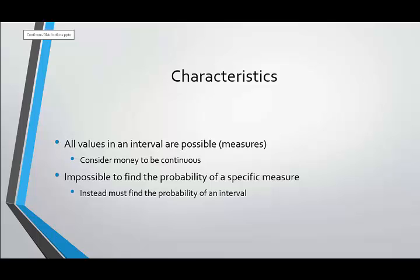So instead, what we have to talk about when we're talking about a continuous distribution is we need to talk about an interval. So rather than saying what's the probability that you weigh 90 kilograms, we could say what's the probability you weigh between 89.5 kilograms and 90.4 kilograms.